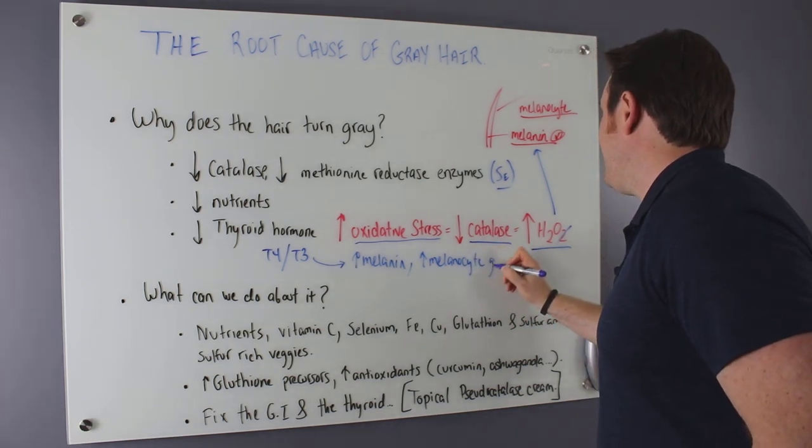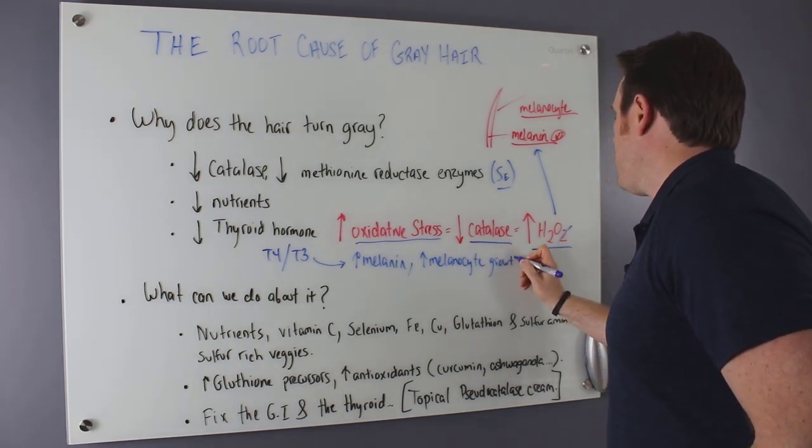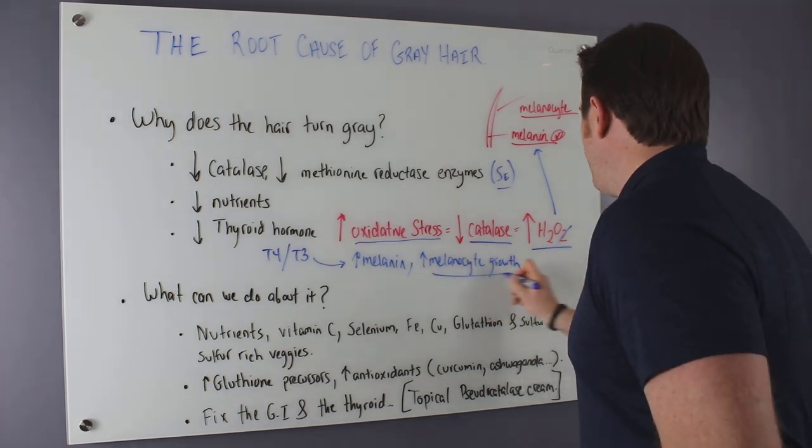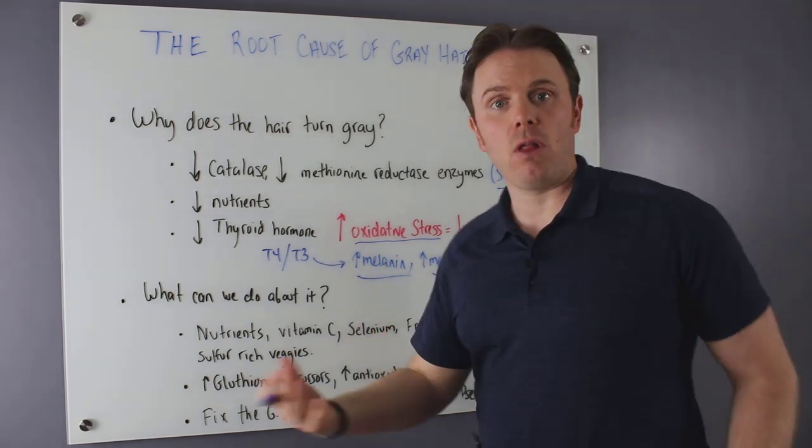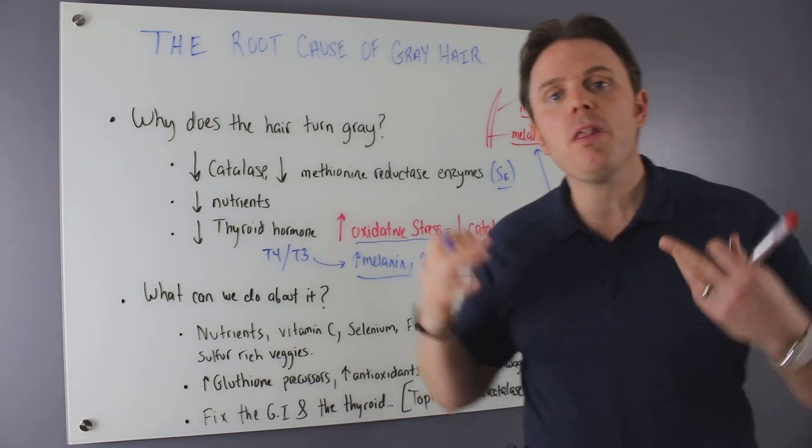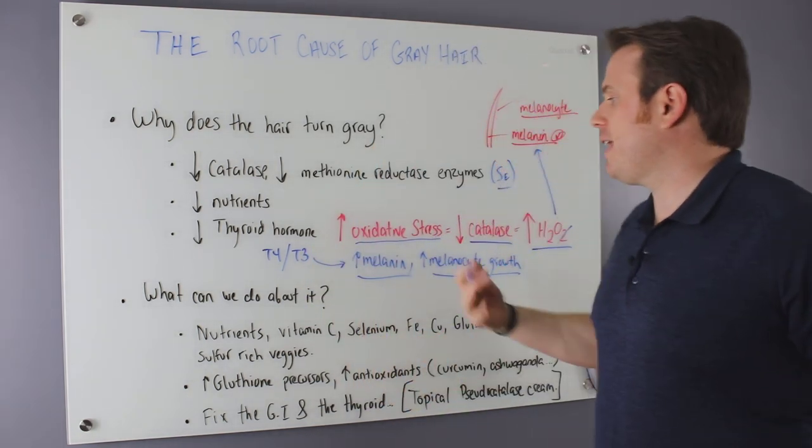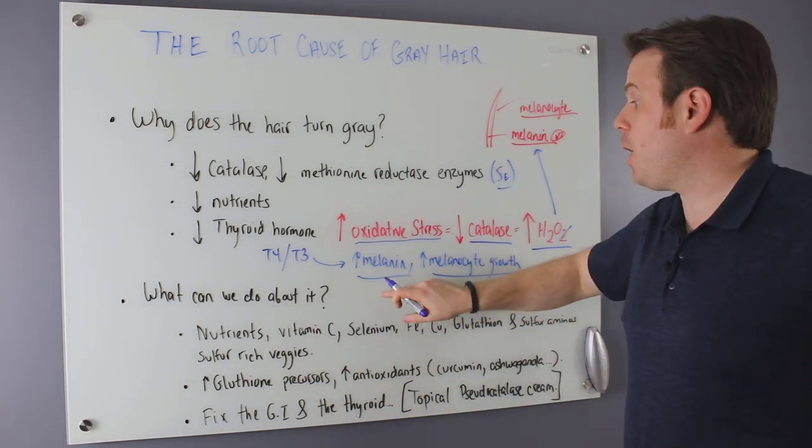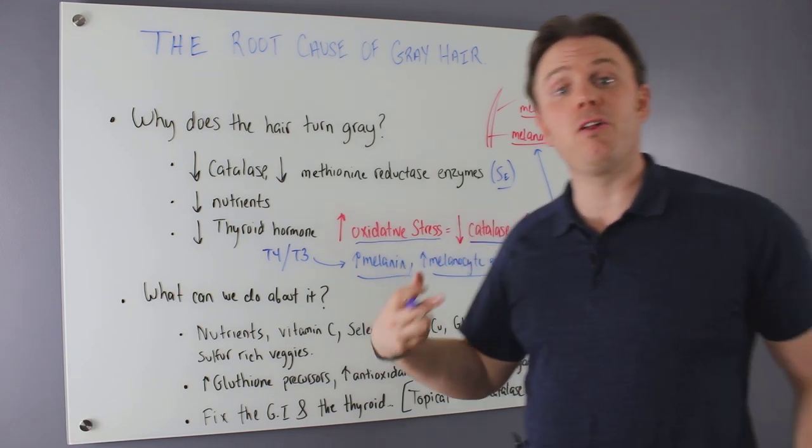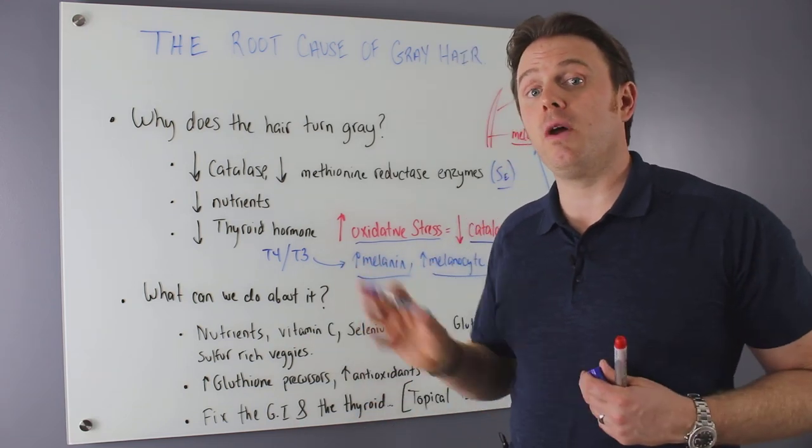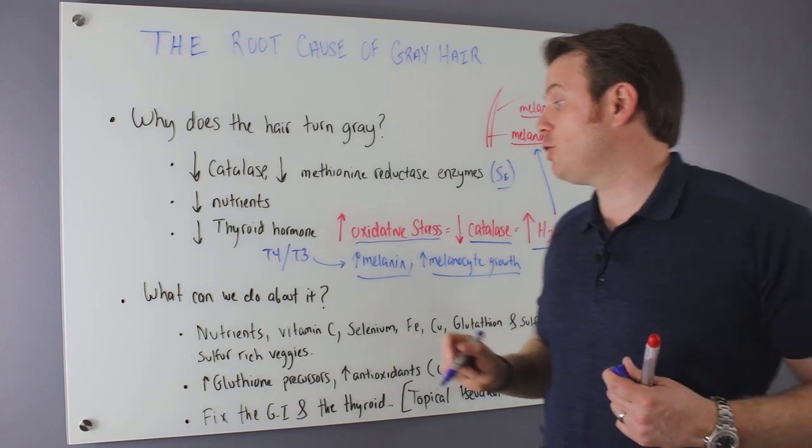That's why when we see low thyroid hormone, one of the major things we can see is hair loss, especially out a third of the eyebrow, of course, on top of the head. So getting adequate thyroid hormone will also help with the color of the hair because it does influence melanin. Found a really good review on this topic that I'll post in the description, too.